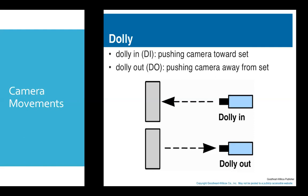That is a perfect example of a dolly camera movement. In this picture on the screen there is a set. When the camera moves towards the set, that is called dolly in movement, whereas when the camera moves away from the set, that is dolly out movement.